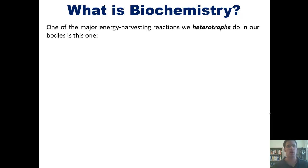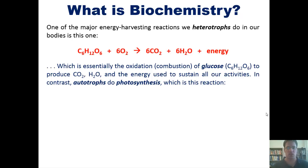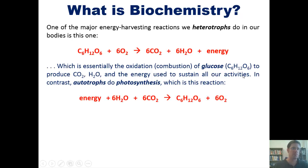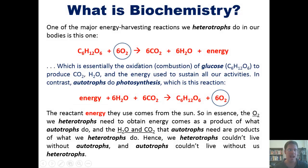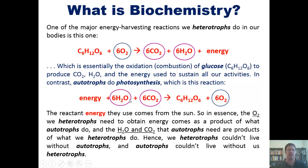One of the major energy-harvesting reactions that we heterotrophs do in our bodies is essentially just the oxidation or combustion of glucose, C6H12O6, to produce CO2, water, and the energy we use to sustain all our activities. In contrast, autotrophs do photosynthesis. If you compare these two reactions, you'll note that they are more or less opposites of each other. The O2 that we heterotrophs need ultimately comes as a product of what autotrophs do, and the CO2 and H2O that autotrophs need ultimately come as a product of what we heterotrophs do. Hence, we couldn't live without autotrophs, and autotrophs couldn't live without us heterotrophs. Isn't that a glorious biochemical dance and balance?